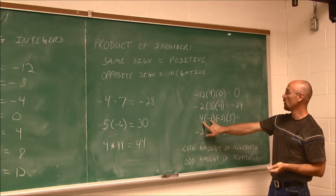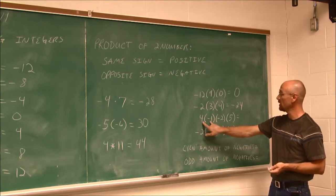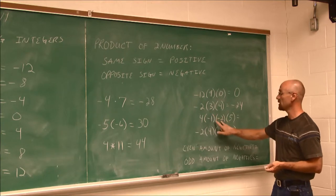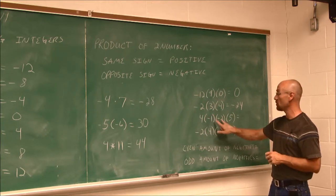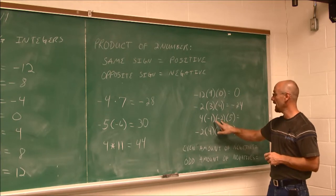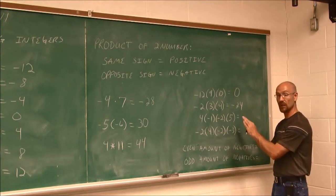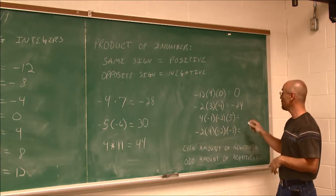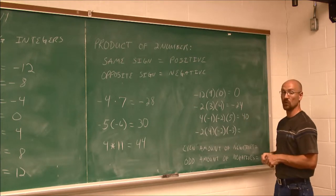4 times negative 1 is negative 4. So this is negative 4 times negative 2 — both negative, same sign, gives me a positive 8. 8 times 5 — those two values are the same sign, I remain positive — and I get 40.